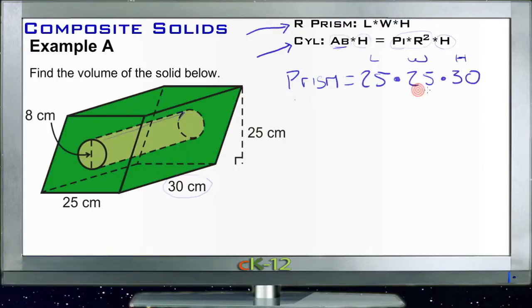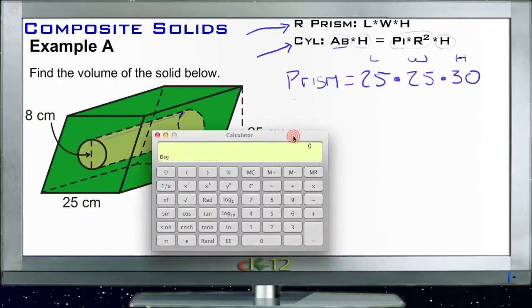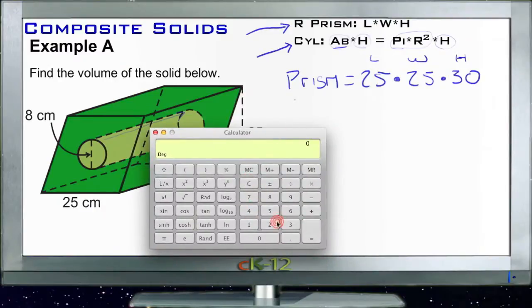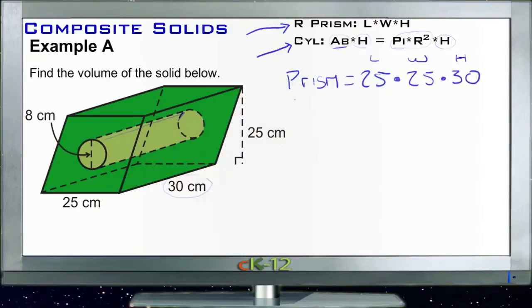So our prism is just 25 times 25 times 30. So if we pull out our handy dandy calculator, we get 25 times 25 times 30, or 18,750. So our prism is 18,750.